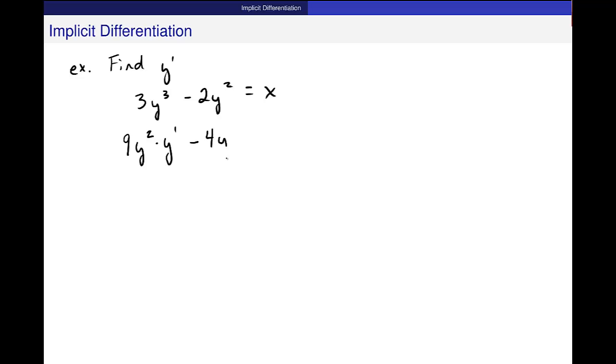Minus 4y also times y prime. And then the derivative of x with respect to x is just 1. Now, I want to find y prime. So, here, let me identify here's my y prime and here's my y prime. It's in both these things. So, I'm going to factor it out. y prime times 9y squared minus 4y equals 1.